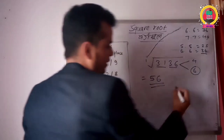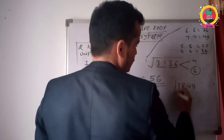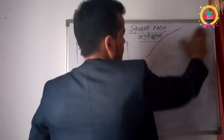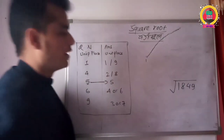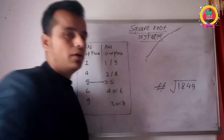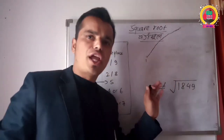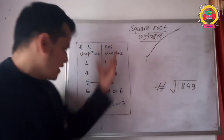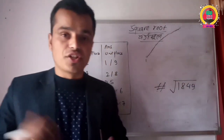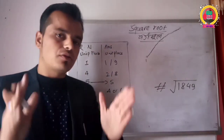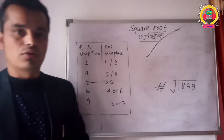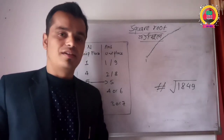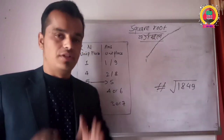Let's try: what is the square root of 1849? You can put your answer in the comment box. The square root of 1849 — first check the digits. Try this yourself and comment your answer. Thank you very much. Like, Share, Comment, and Subscribe. See you next time. Namaste.